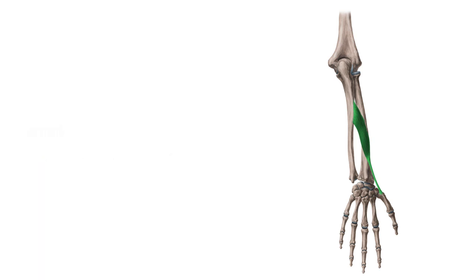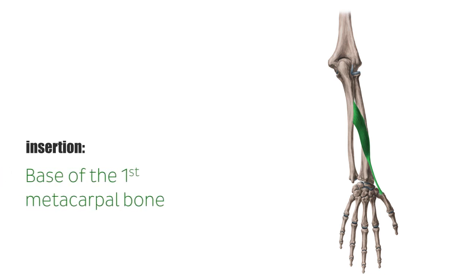The abductor pollicis longus has its insertion at the base of the first metacarpal bone, the metacarpal bone of the thumb. Often, the insertion tendon splits into two and additionally attaches to the trapezium.